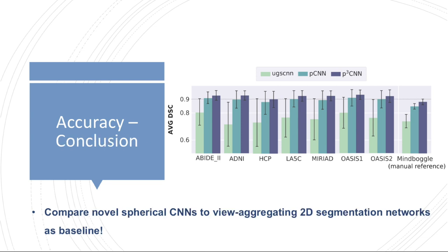So in total, our results show that spherical CNNs are not yet capable of outperforming parameterization approaches, despite the promise of a non-distorted operating space. We would therefore recommend comparing novel spherical or geometric convolutional neural network approaches not only to existing geometric methods but more importantly to view-aggregating 2D segmentation networks in the spherical parameter space as a baseline.